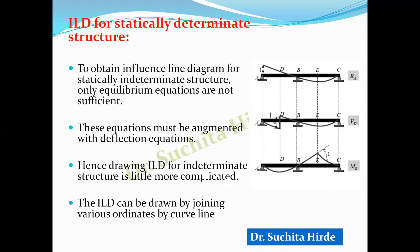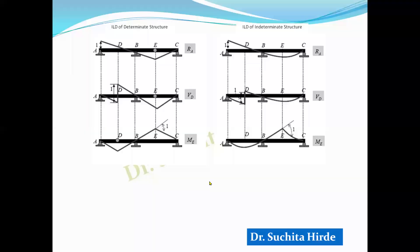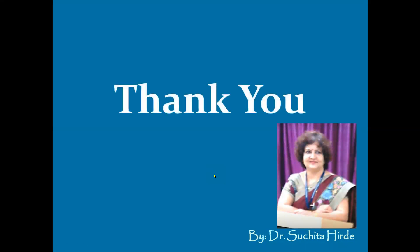A correction: the structure shown is an indeterminate structure because it is a continuous beam. The other structure is a determinate structure because it has one additional condition available due to the internal hinge — that is, the bending moment at E equals zero — and therefore that one is determinate while the other is indeterminate. I hope you find this video useful. Thanks to all those who have subscribed to my channel. Stay connected and press the bell icon to get notifications of upcoming videos. Thank you.